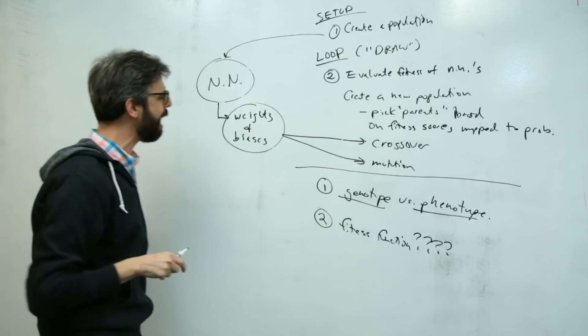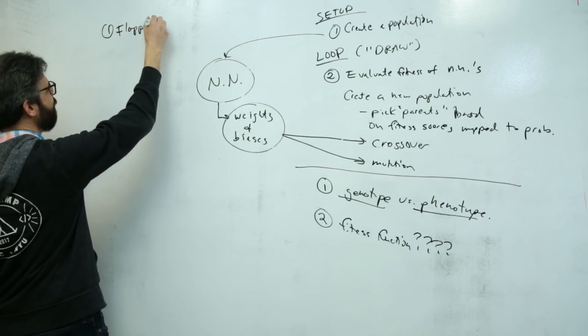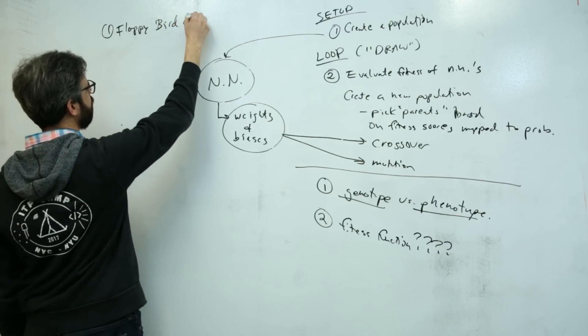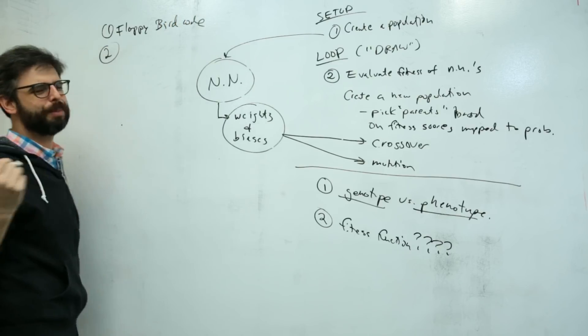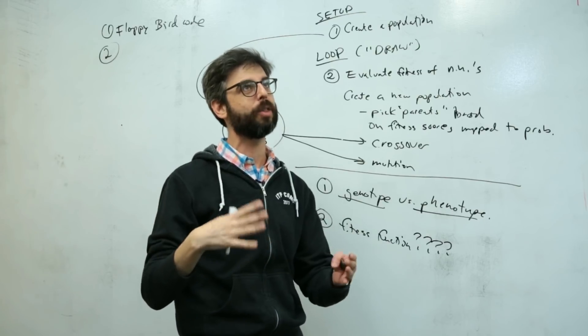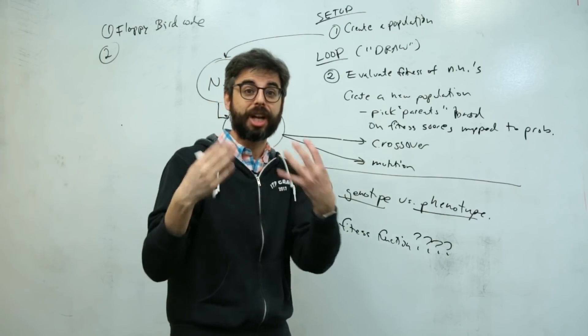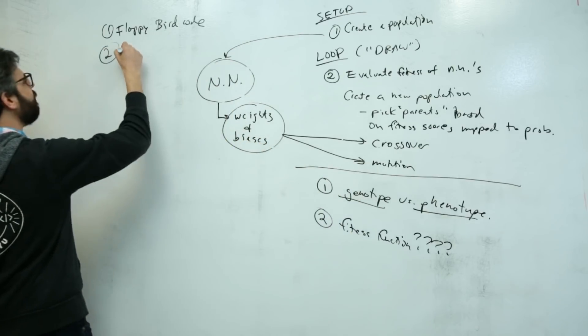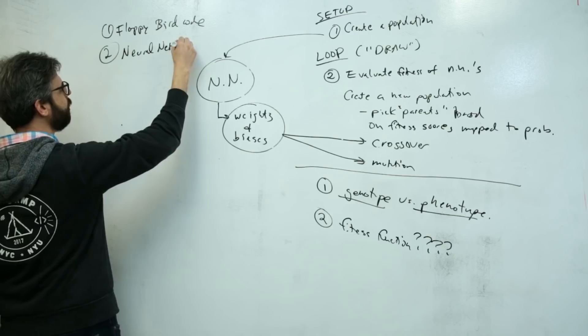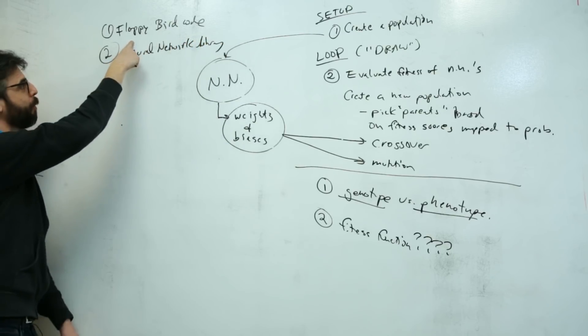What do I have already? If I'm going for this Flappy Bird example, I already have the Flappy Bird game code. I have my genetic algorithm examples, but ultimately I don't really have a genetic algorithm library per se, so I'm probably going to have to build that. But I do have a neural network library.